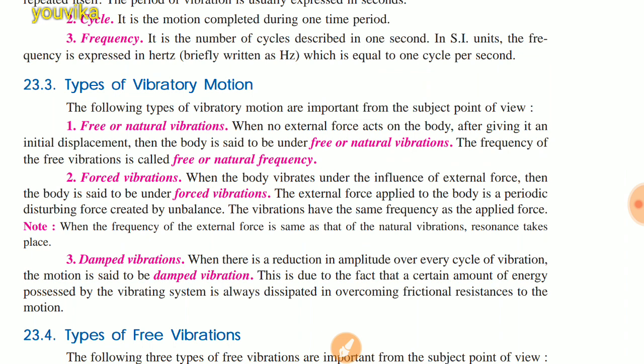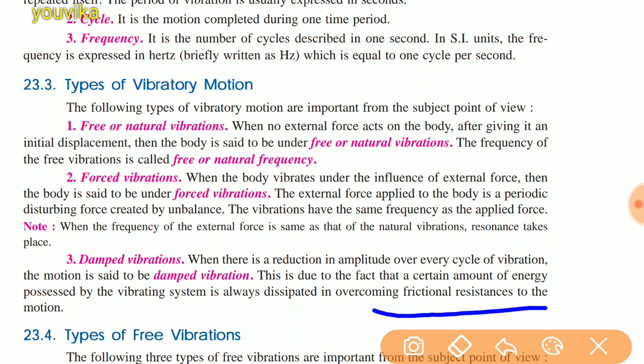Damped vibration: when there is a reduction in amplitude over every cycle of vibration, the motion is said to be damped vibration. This is due to the fact that a certain amount of energy possessed by the vibrating system is always dissipated in overcoming friction resistance to the motion. Friction resistance reduces the vibration — this is damped vibration.